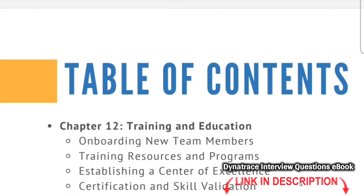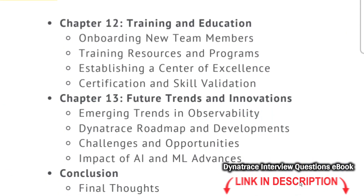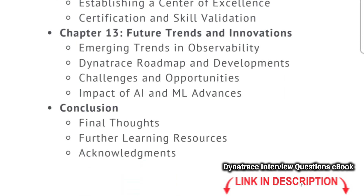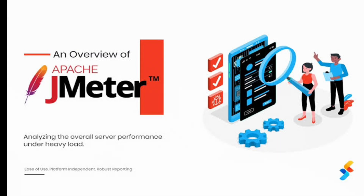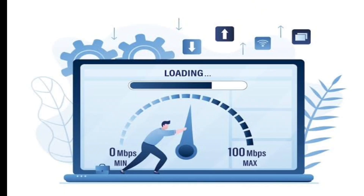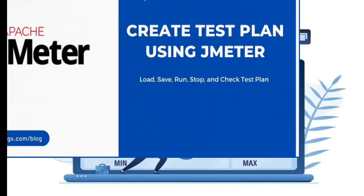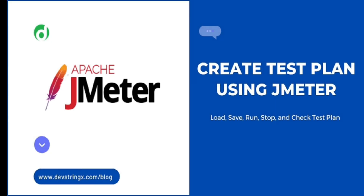JMeter is an open source tool that helps developers test the performance of their software. It simulates a large number of users interacting with the software at the same time, so developers can see how it performs under heavy loads.